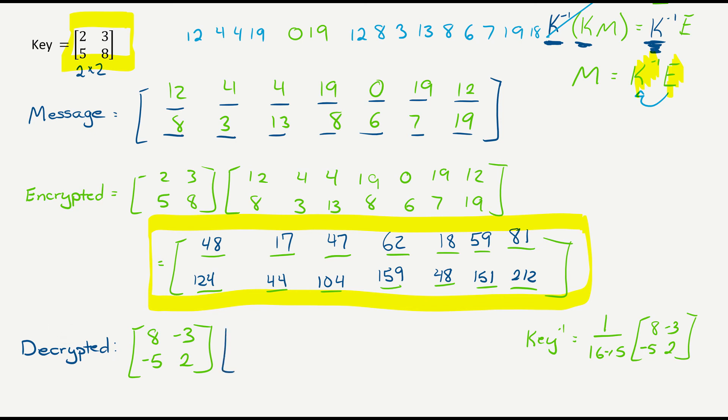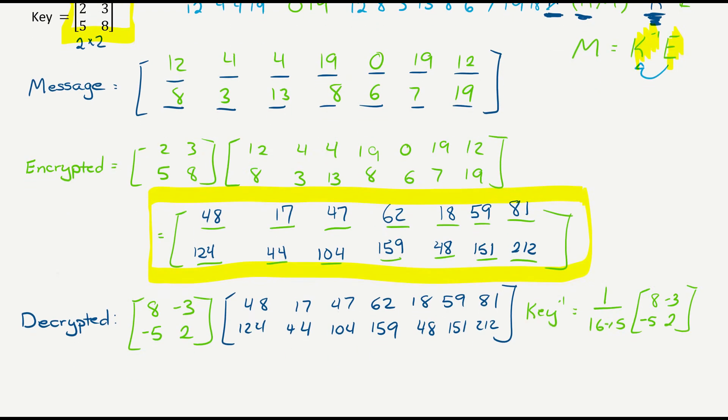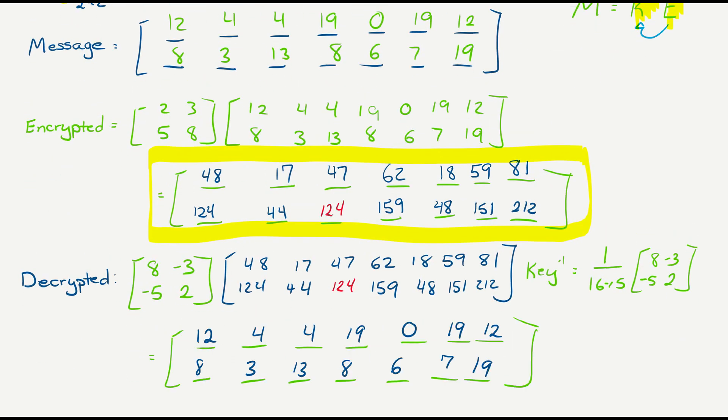And we take that, and we multiply it by our encrypted message matrix. And this will give us another two by seven matrix, except this time it will be decrypted. And it should return that original message matrix exactly as we had. So once again, I'm going to go through this, and I'm going to multiply these together. And I'll check in with you once I have it multiplied. I did my multiplication.